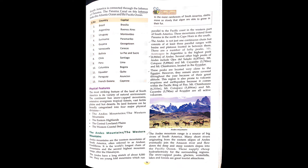After that, physical features. The most striking feature of the land of South America is its variety of nature and environment. The continent has snow-capped mountains, extended evergreen tropical forests, vast fertile plains and hot deserts. Its land features can be broadly categorised into four major physical divisions: the Andes Mountains (the Western Mountains), the Eastern Highlands, the Central Lowlands, and the Western Coastal Strip.